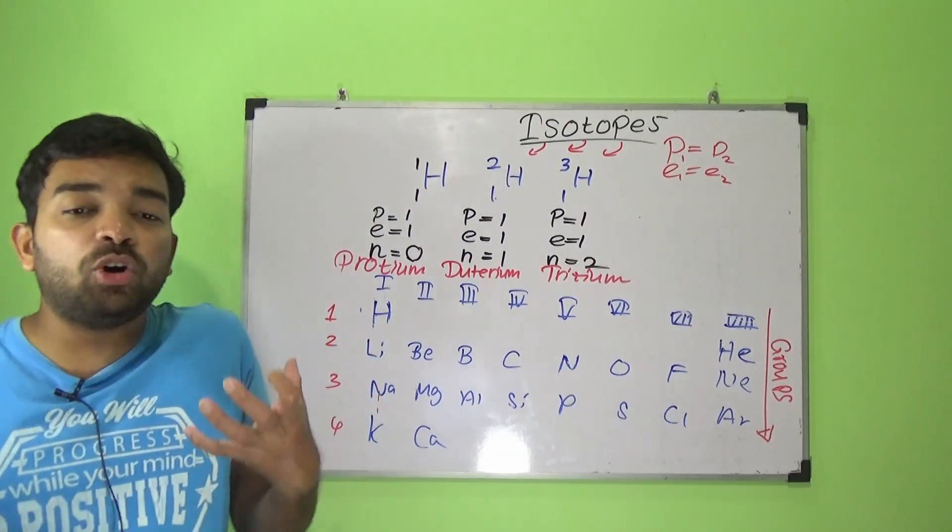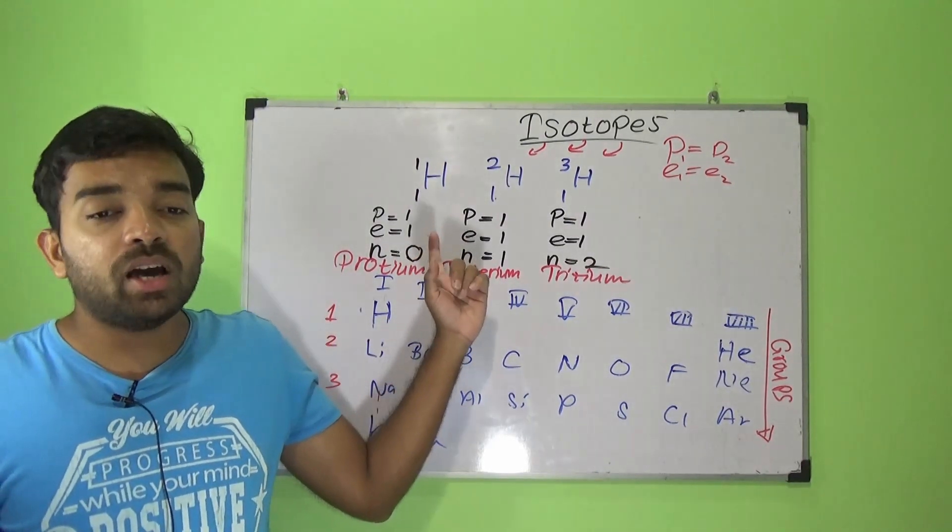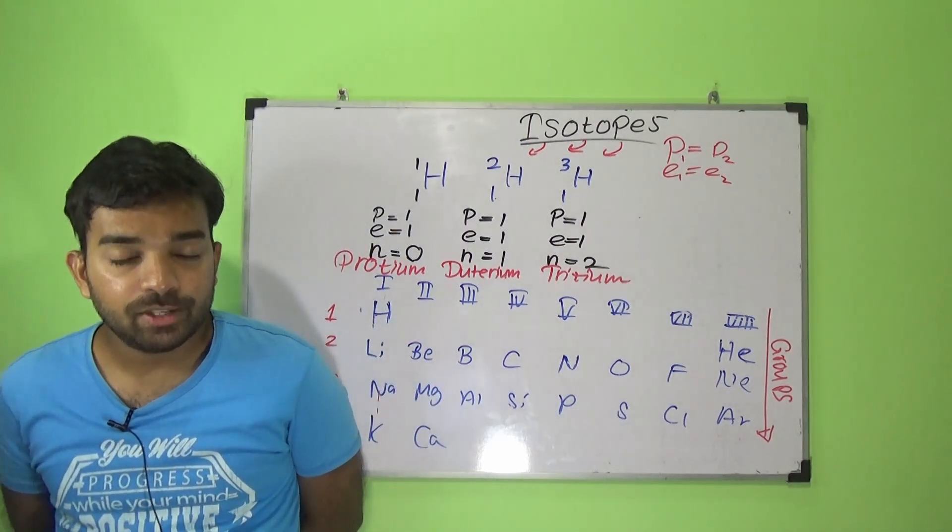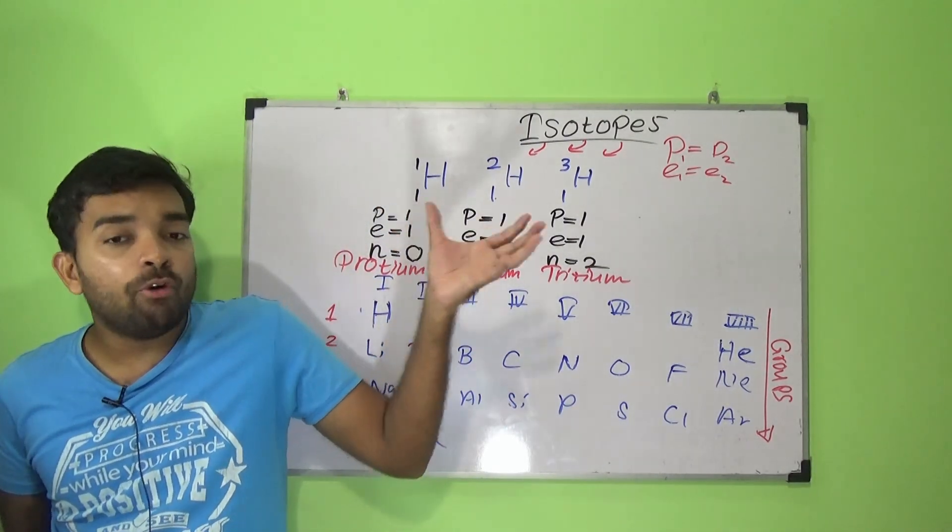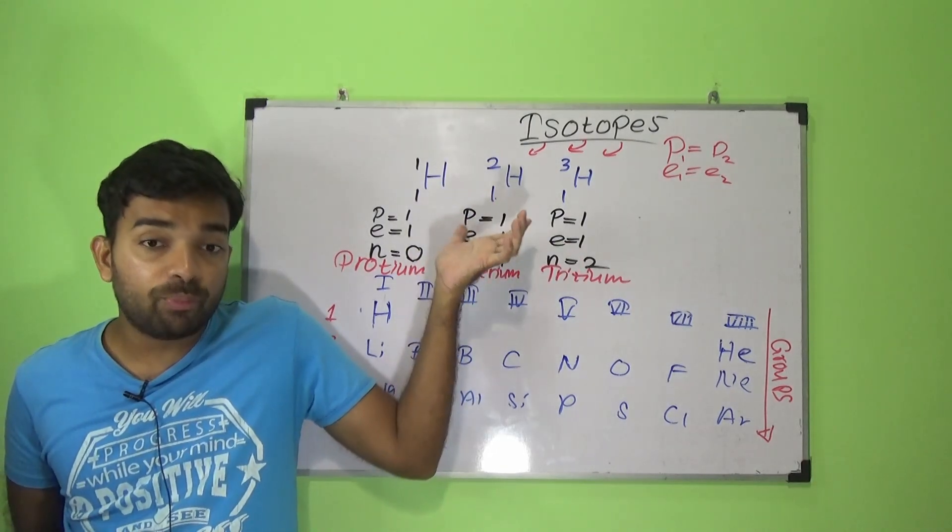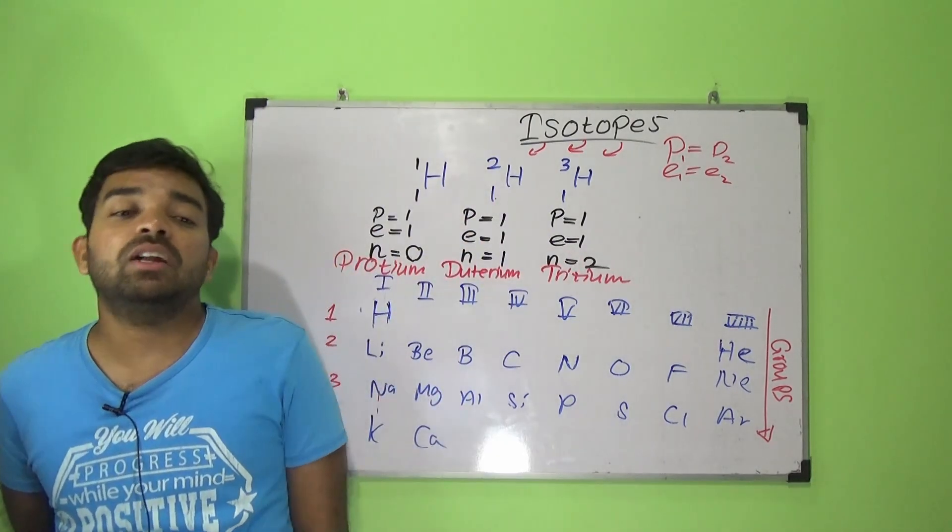But basically, we call it protium, deuterium, and tritium. Isotopes means same number of protons and electrons, but different number of neutrons.